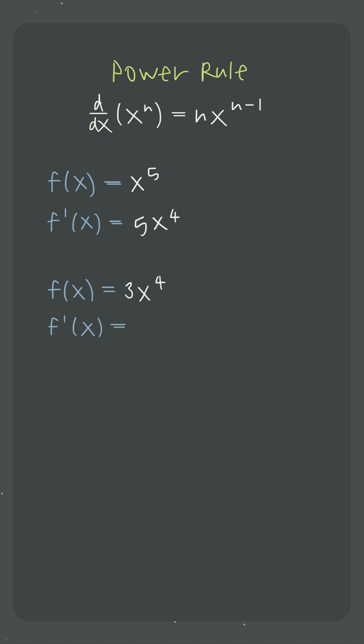If the power function already has a coefficient, like this 3, nothing changes. The exponent comes down in front to multiply the existing coefficient, and we still subtract one from the exponent.